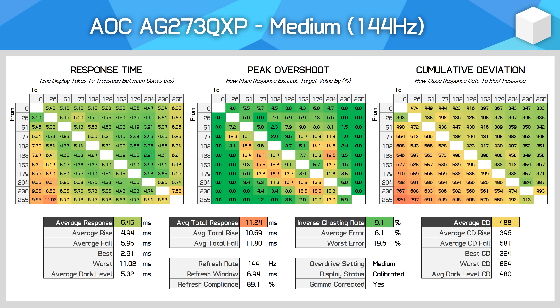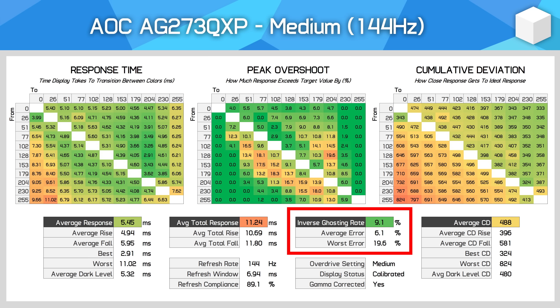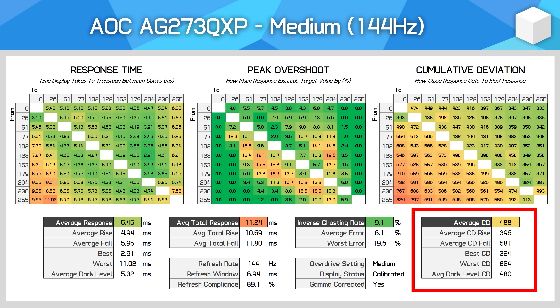Below this is our refresh rate information including the refresh rate and refresh window — the window being how long each frame is displayed on screen. Refresh compliance is a look at how many measured transitions complete within this refresh window. Right centre we have our error metrics: inverse ghosting rate is a measure of how many measured transitions exceed an overshoot of 15%, as we've experimentally discovered that an overshoot of 15% is around where you'll notice inverse ghosting in practice. On the right are the cumulative deviation numbers. The beauty of these new charts is that it makes finding the optimal overdrive setting easier — the minimum cumulative deviation level at a given overdrive setting generally gives the best balance of response times and overshoot.